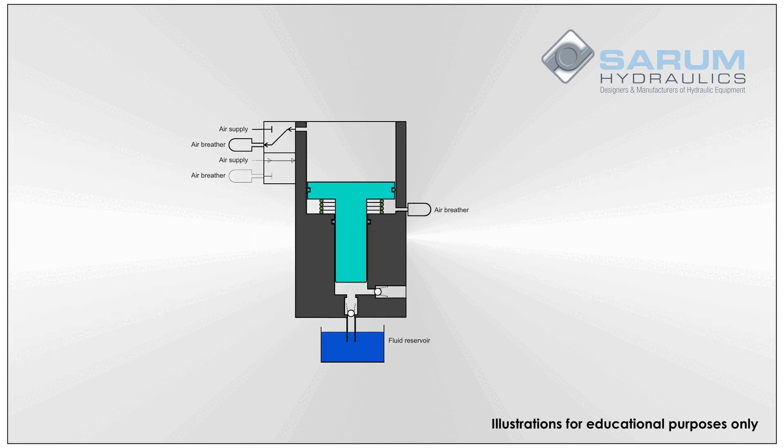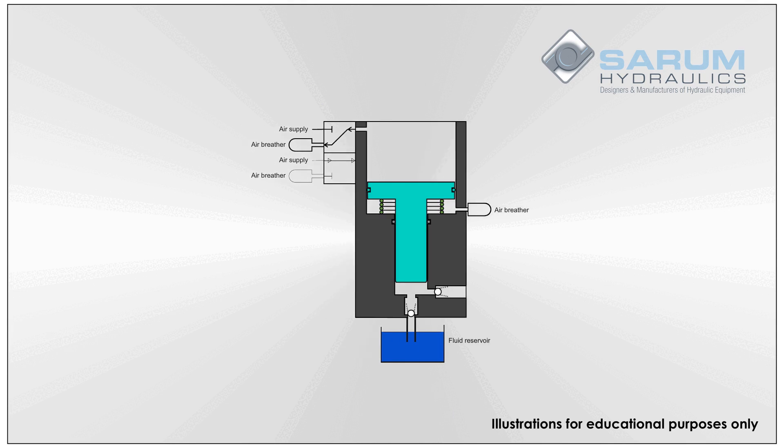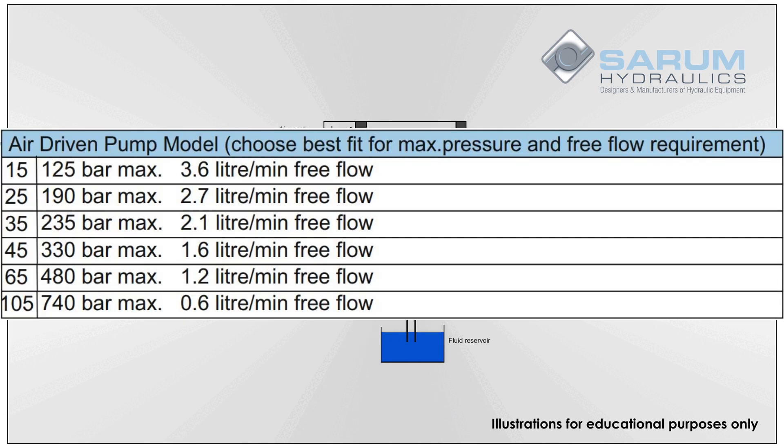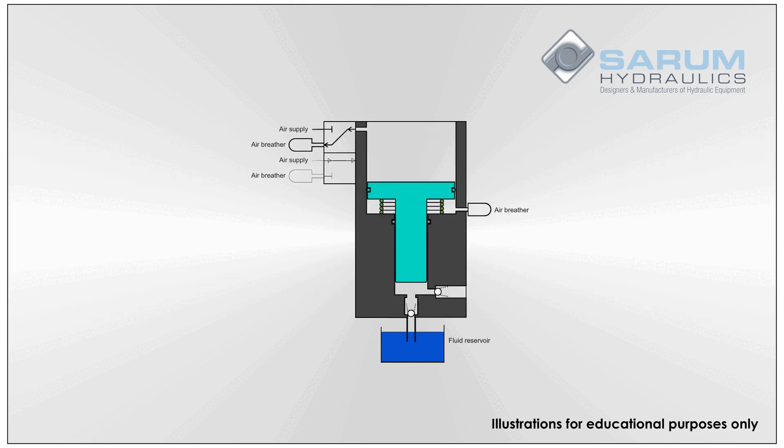Our pump models run right up to 105 to 1 ratio. That gives up to 740 bar of hydraulic pressure from a standard shop air supply. At the other end of the ratio scale you get up to 3.6 litres per minute hydraulic output at free flow. This is how in principle the air driven pumps work.